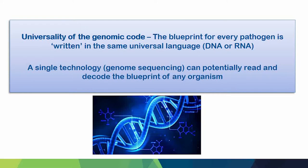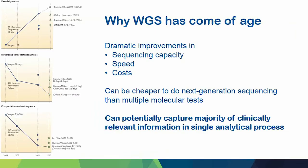Moving on to genomics. The great promise of genomics is that all of life is encoded in DNA, and if we can have a single technology that can decode that DNA blueprint, you could decode any organism you might want to think of — a universal analytical process to understand pathogens. Whole genome sequencing has really now come of age, mainly driven by technology. We now have platforms that produce exponentially greater amounts of data in shorter periods of time and at much reduced cost. When the first human genomes were produced they cost billions of dollars — you can now do a bacterial genome for about a hundred dollars.